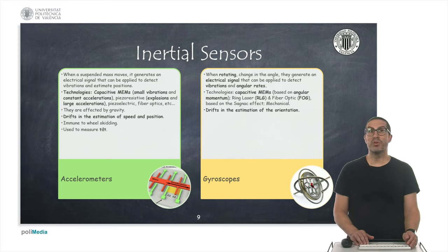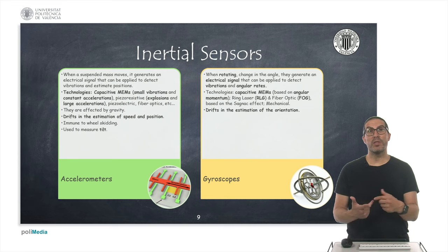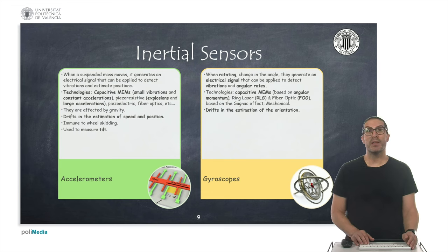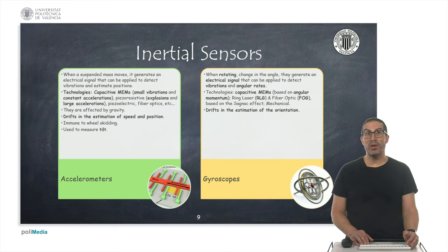In robotics we also use inertial sensors such as accelerometers and gyroscopes, used to measure acceleration or angular rate respectively. They can measure different axes: x, y, and z. The working principle of accelerometers involves a suspended mass whose movement is caused by an external acceleration, indirectly generating an electrical signal. The sensors commonly used in robotics are based on MEMS technology.